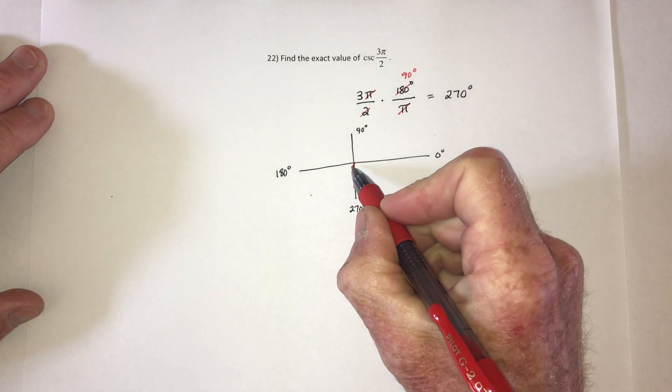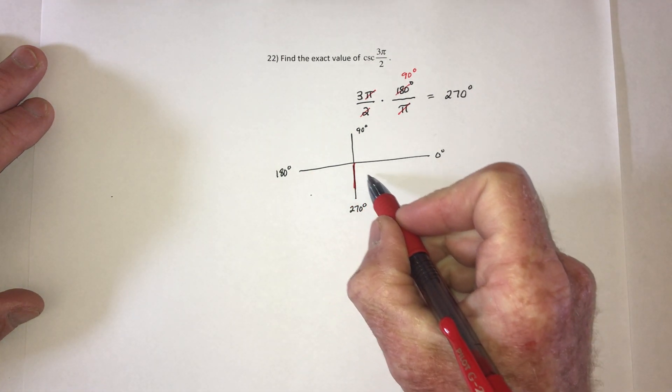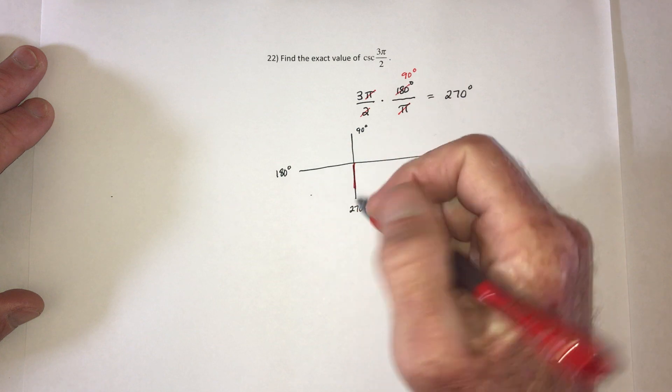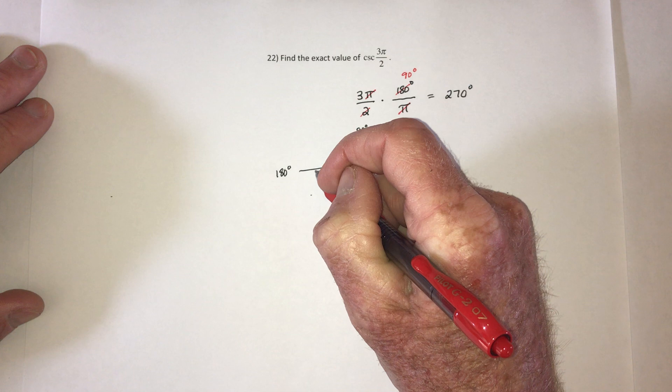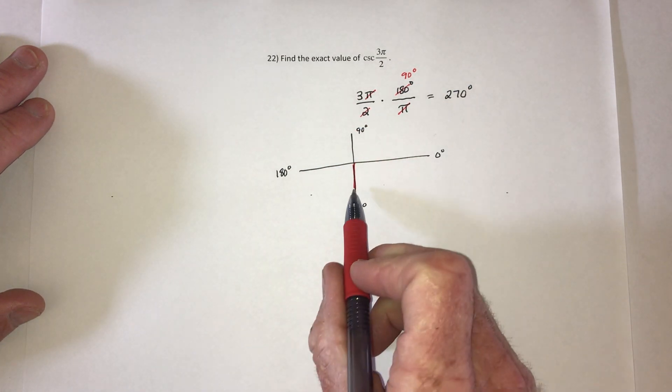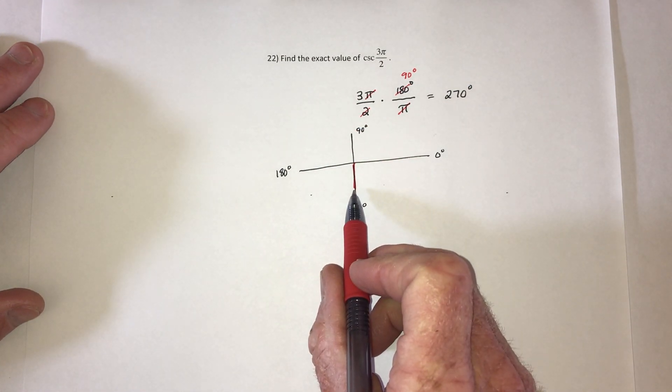Now usually the angle would be like this or like this or like this, and then if it was like this, I could draw a straight line perpendicular to the x-axis and make a triangle. With this one I can't, so I have to do it in a different way.